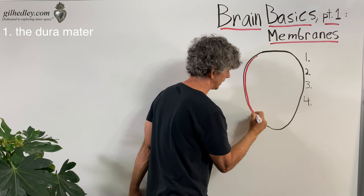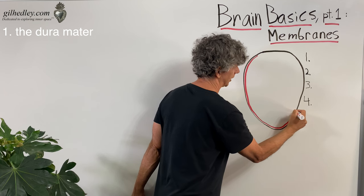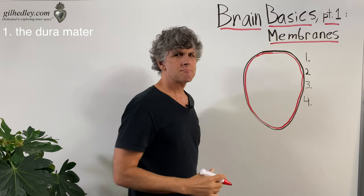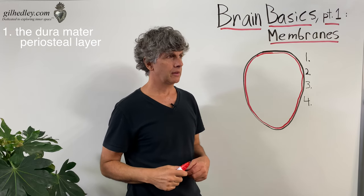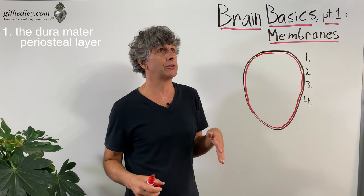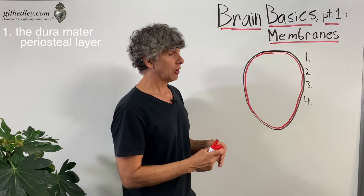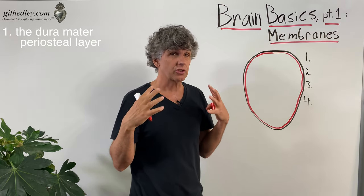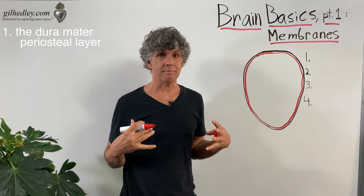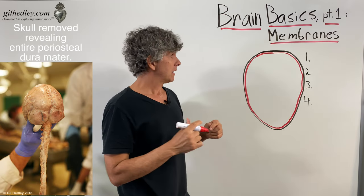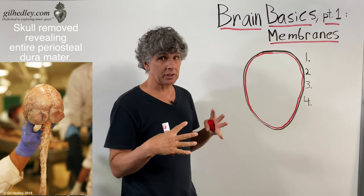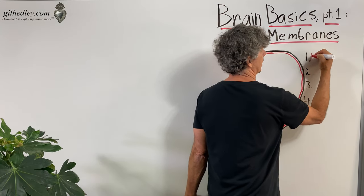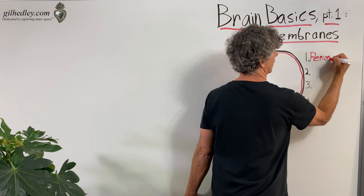Let's start with number one: the dura mater. The dura mater interestingly has two layers. The first layer is called the periosteal dura mater — periosteal meaning 'peri' around the 'ostium,' the bone. So the periosteal dura lines the skull on the inside. Your skull has a tough fibrous fascial membranous lining — it's really tough, built into the bone; you have to pull it away if you're trying to demonstrate it.